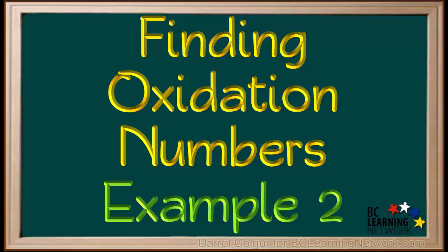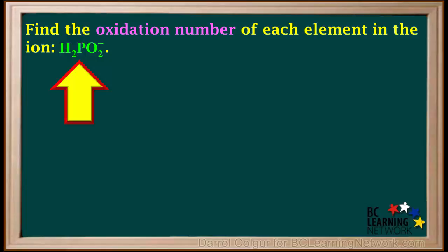Here, we'll go through an example of finding the oxidation number of each element in a polyatomic ion. We're asked to find the oxidation number of each element in the ion with the formula H2PO2-.